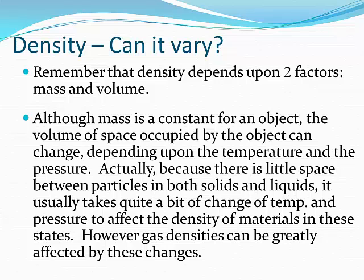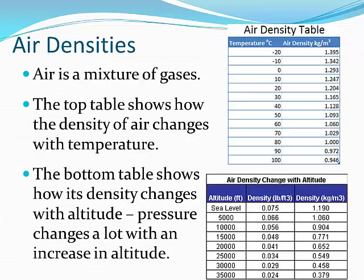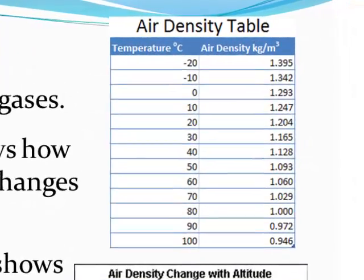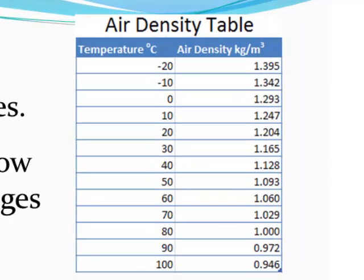Gas densities can vary quite a bit. Here we see two tables that are both density tables for air. The one on top shows air densities as temperature changes, starting from very cold temperatures of negative 20 degrees Celsius, where air has a density of 1.395 kilograms per cubic meter. At room temperature around 20 degrees Celsius the density is about 1.2, and at the boiling point of water — 100 degrees Celsius — air's density decreases to 0.946 kilograms per cubic meter. Notice the huge change in density there.